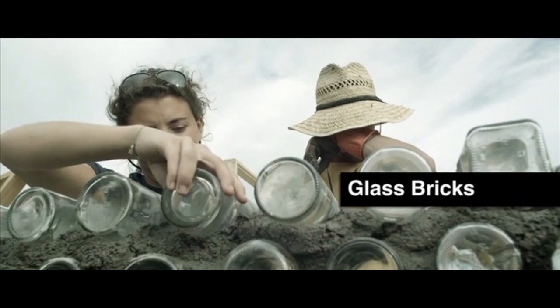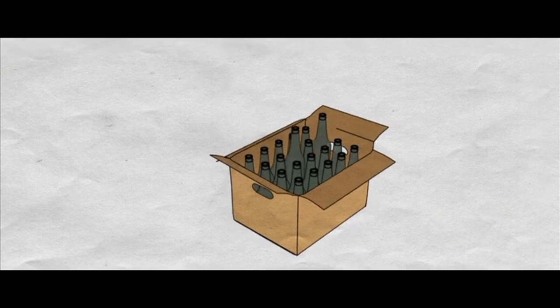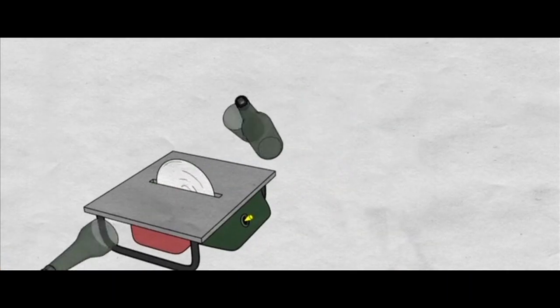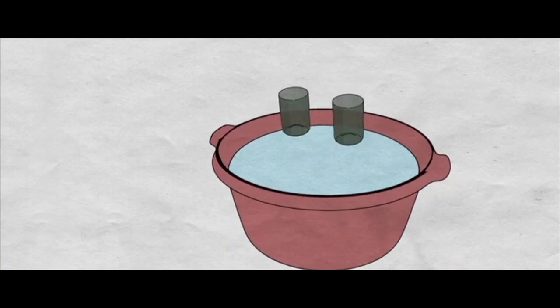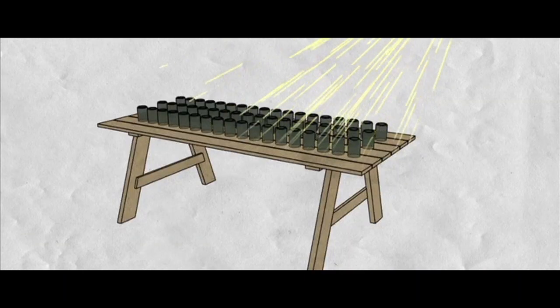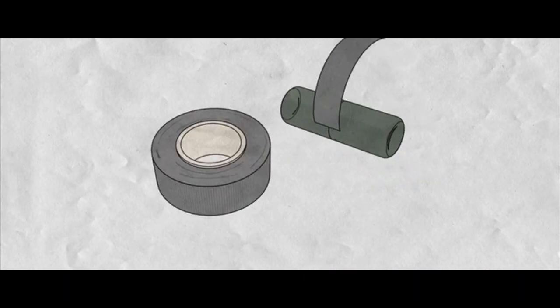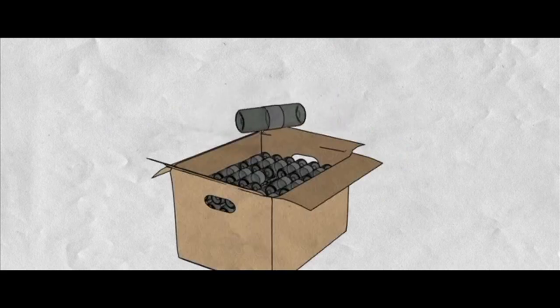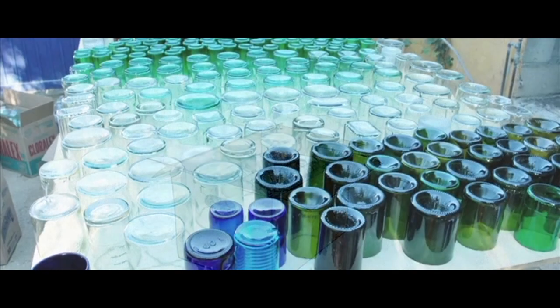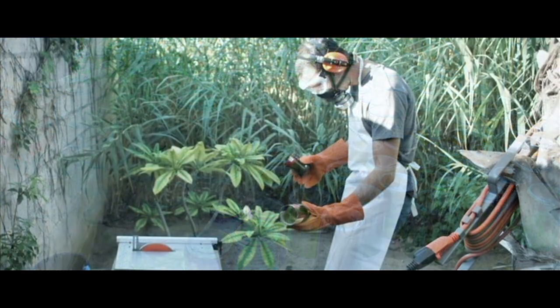Glass bricks. To make these, you need two bottles of the same kind. Then you cut them with a cutting disc, wash them, and once fully dry, you join them with duct tape to make sure they are well insulated from moisture. The Earthship's Mexico team prepared over 7,000 glass bricks.